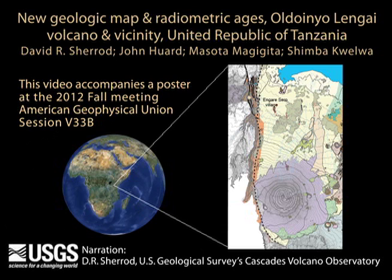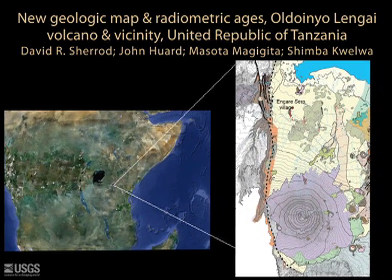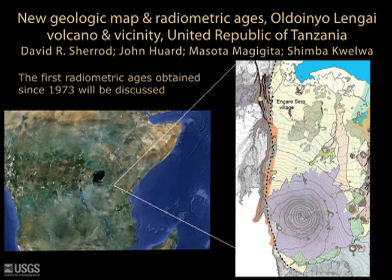This video describes a poster being presented at the 2012 fall meeting of the American Geophysical Union in San Francisco, as part of a session on geologic maps. It would prove difficult to convey all the information of a geologic map in a few minutes. Instead, this video describes radiometric ages obtained as part of the mapping.